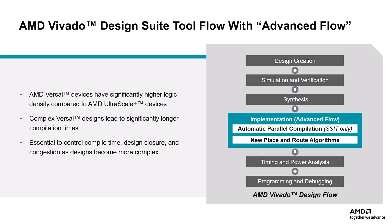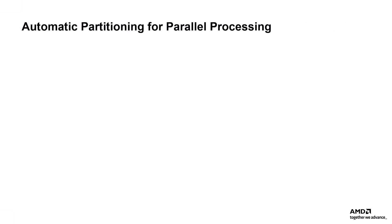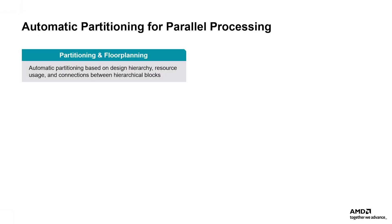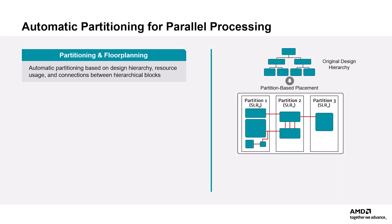After placement, the partitioning information is passed to the router so that the partitions can be routed in parallel. Subsequent processes such as timing and power analysis, programming, and debugging are performed the same as with previous versions of Vivado. The design flow begins with automatic partitioning and floor planning. For SSIT devices, this partitioning is done by the automatic partitioner in the placer. The partitioner analyzes the design hierarchy, resource usage,